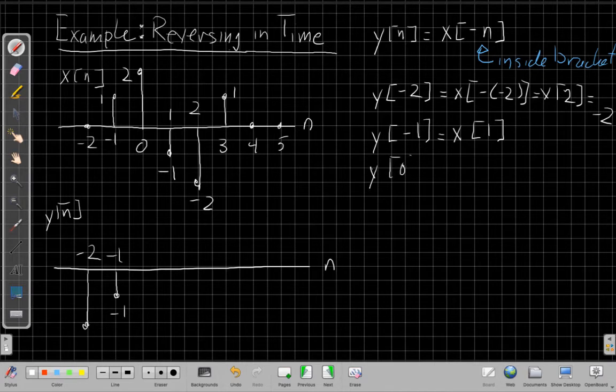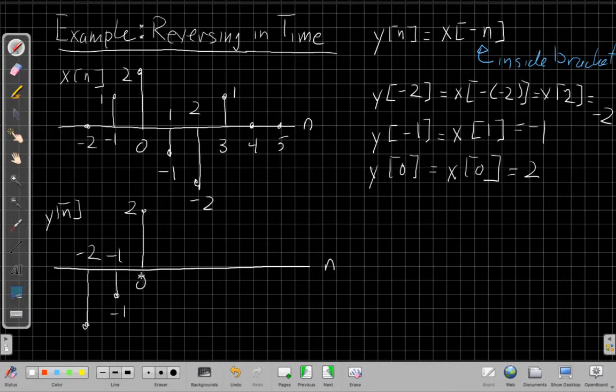Y of 0 is equal to x of minus 0, which is unchanged. So if I go look at 0, x has an amplitude of 2. So I can plug that in. And now I'm going to encourage you to pause the video at this point and go through the rest of it yourself, finish the rest of the time indices, and then come back and check against mine.